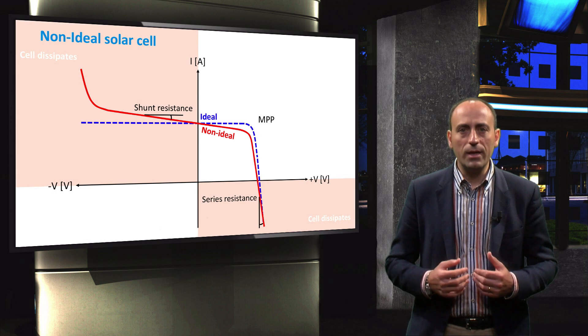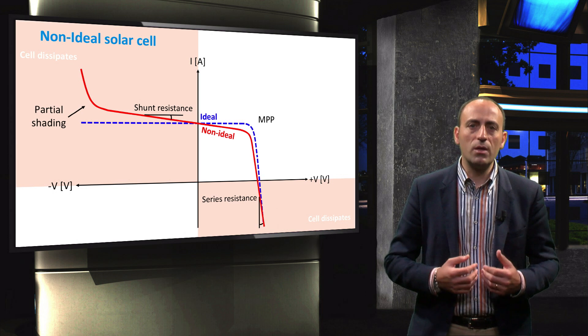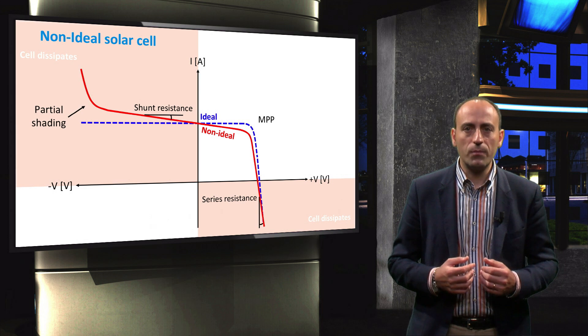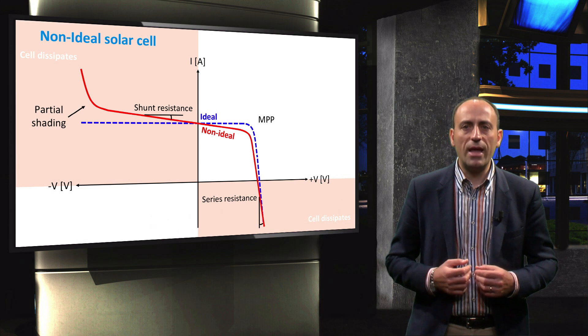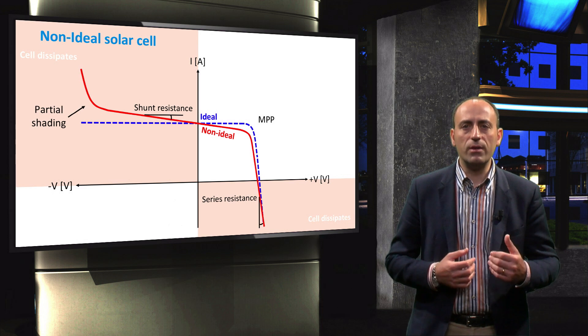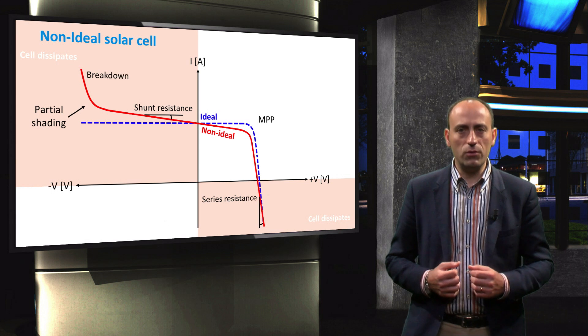For example, in case of partial shading, the solar cell operates in the reverse voltage region. At some point in this region, the reverse biased solar cell experiences a very high current that may cause a breakdown of the junction.